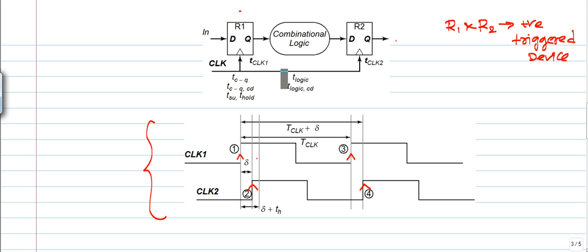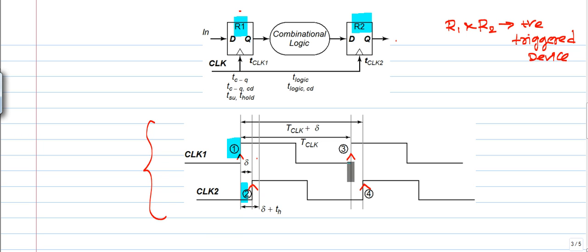We will discuss these basic concepts in two phases. The first phase is when registers R1 and R2 receive points 1 and 2, and after a certain time, registers R1 and R2 again receive points 3 and 4 — the second positive edge. First, we will discuss what happens when R1 and R2 receive points 1 and 2.